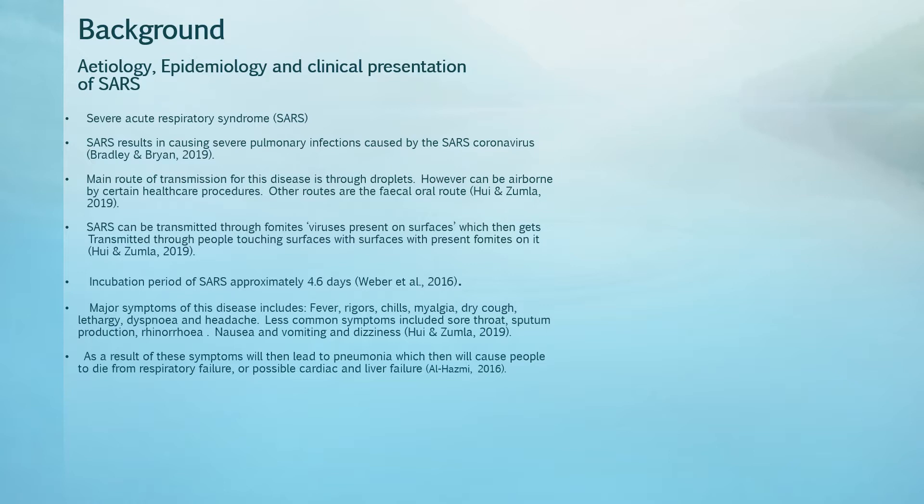I'll give you a brief overview of the disease itself. Severe acute respiratory syndrome, SARS, causes a rapid fatal infection of the lungs caused by the SARS coronavirus. The mode of transmission is via respiratory droplets, however this disease can become airborne through certain procedures in healthcare such as use of nebulisers, high flow nasal prongs, invasive ventilation and non-invasive ventilation. Other transmission routes include the faecal-oral route, as this virus can be present in stools, and it can also spread as a fomite — a virus left on a surface which can be spread by people touching that surface.